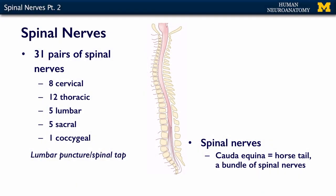You might ask: I only have 7 cervical vertebrae, how can I have 8 cervical nerves? Where this gets a little confusing is that you have 7 cervical vertebrae but 8 cervical nerves. This is because C1 exits over the top of the first cervical vertebrae, right underneath the skull base and right over the C1 vertebrae. So C1 through C8 exit over the vertebral body.